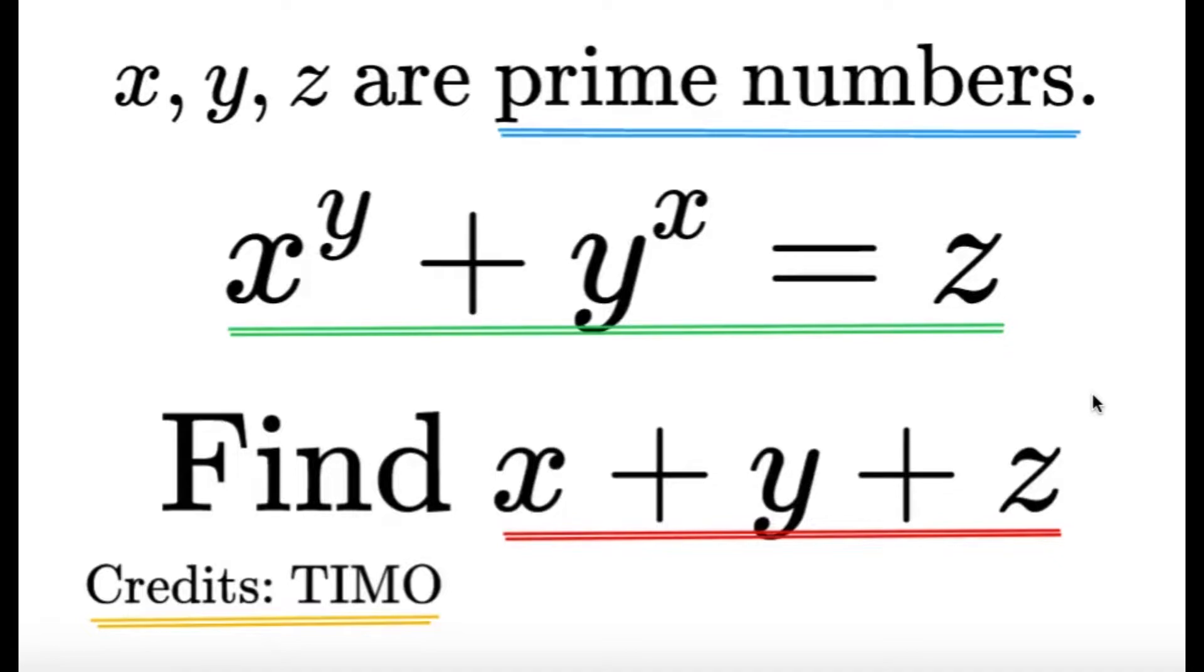Hello, hello! It's Domflet here. Here's an item on number theory. x, y, and z are prime numbers such that x raised to y plus y raised to x equals z. Find the value of x plus y plus z. Credits to the Thailand International Math Olympiad for this item.